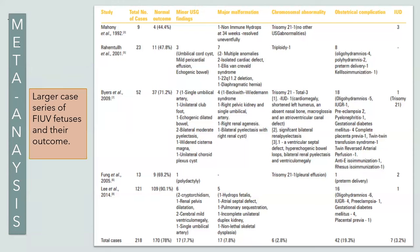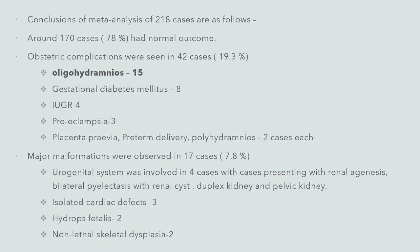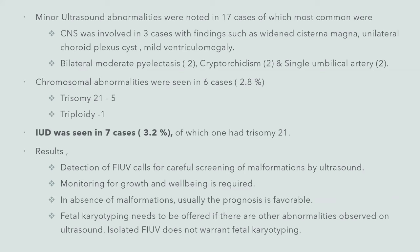A meta-analysis of 218 cases was conducted. Around 170 cases had normal outcomes. Obstetric complications were seen in 42 cases, of which 15 had oligohydramnios, 8 had gestational diabetes mellitus, 4 had IUGR, 3 had preeclampsia, and placenta previa, preterm delivery, and polyhydramnios were seen in 2 cases each. Major malformations were observed in 17 cases, of which the urogenital system was involved in 4 cases, isolated cardiac defects in 3 cases, and hydrocephalus and non-lethal skeletal dysplasia in 2 cases each. Minor ultrasound abnormalities were noted in 17 cases, of which the most common was echogenic lens nucleus (CLN) in 3 cases, with bilateral moderate pyelectasis, cryptorchidism, and single umbilical artery seen in 2 cases each.